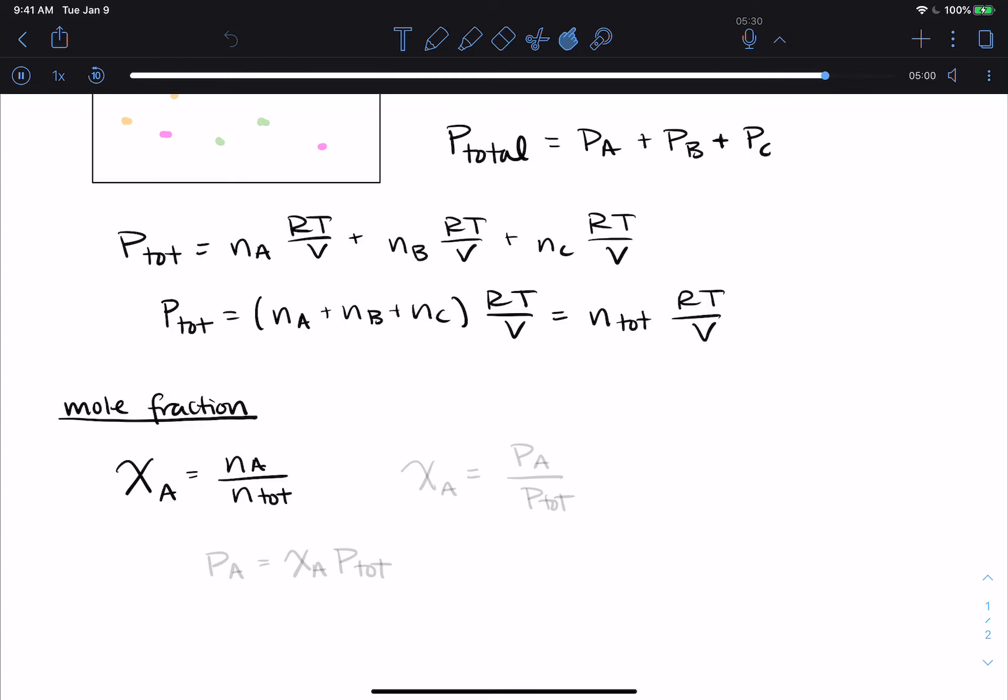Now, because of how things are related through the ideal gas law and Dalton's law of partial pressures, this means that another way that we could calculate the mole fraction of A is to take the partial pressure of A and divide it by the total pressure of the sample. And we can find the partial pressure of A if we know the mole fraction of A and the total pressure of the sample.